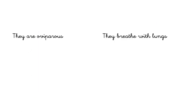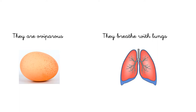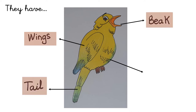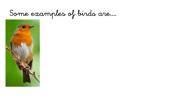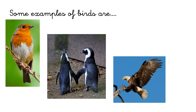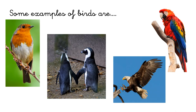Birds are oviparous. They are born from an egg, and they breathe with lungs. They have wings, tail, a beak, and feathers. Some examples of birds are the sparrow, the penguin, the eagle, and the parrot.